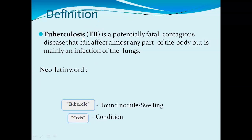Tuberculosis is a bacterial disease and it is a disease of the respiratory system. TB is a potentially fatal contagious disease which can affect almost any part of the body. Though it is primarily a respiratory disease, it can also occur in the kidneys, spinal cord, or brain, but it is mainly an infection of the lungs.